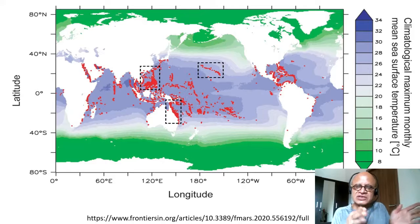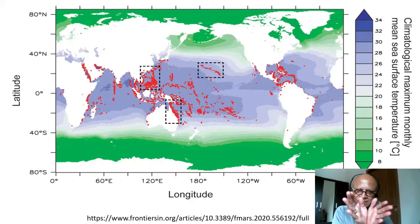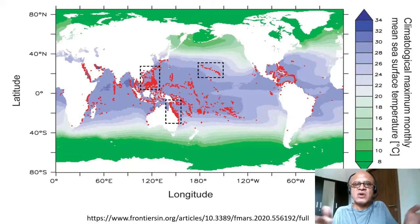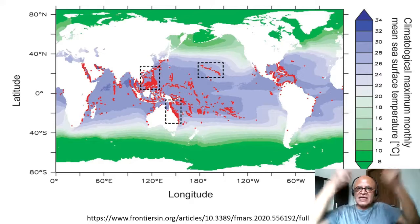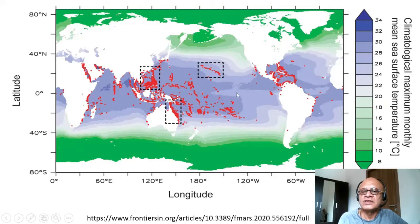The Coriolis pushes things to the right of the direction of motion in the northern hemisphere and to the left in the southern hemisphere. So on the equator the water is pushed right in the northern hemisphere and left in the southern hemisphere — waters part like Moses did in the Red Sea, and then cold water has to come up.